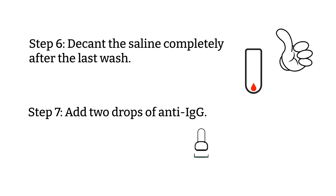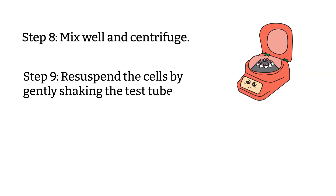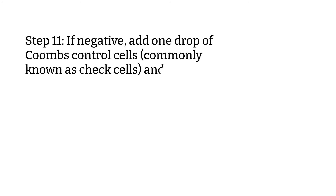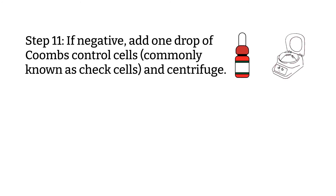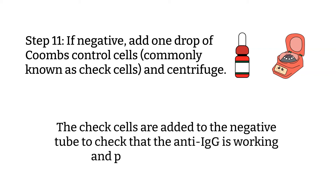Step 6: Make sure you decant the saline completely after the last wash. Step 7: Add two drops of anti-IgG. Step 8: Mix well and centrifuge. Step 9: Resuspend the cells by gently flicking the test tube. Step 10: Examine the agglutination. Step 11: If negative, add one drop of Coombs control cells, commonly known as check cells, and centrifuge.